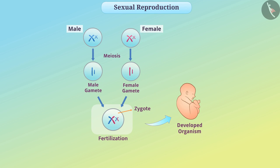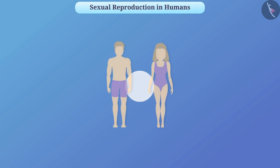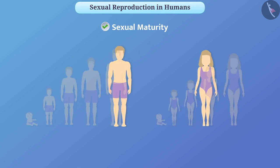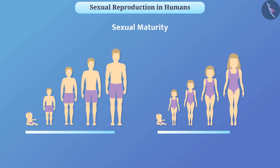Let's understand sexual reproduction in humans. Sexual maturity of parents is necessary in sexual reproduction. As a person grows in age, many changes occur in the body such as increase in length and weight.